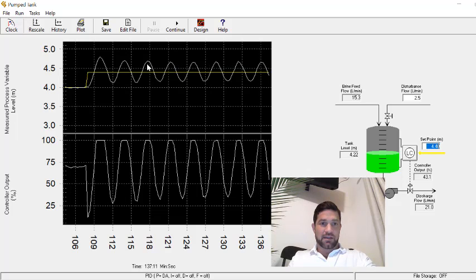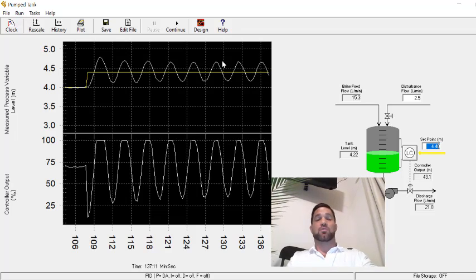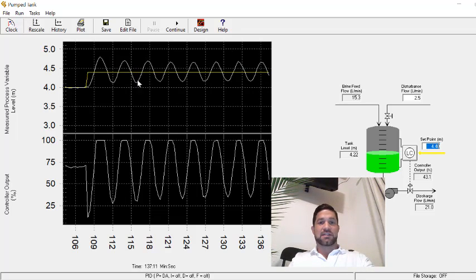114 to 136 for 1, 2, 3, 4, 5, 6, 7. So 136 minus 114 is 22 over 7, so about 3.1-ish or so. So we can get the tau i based on that information. That's the ultimate period.